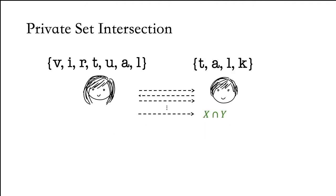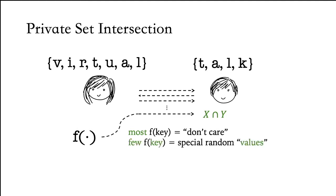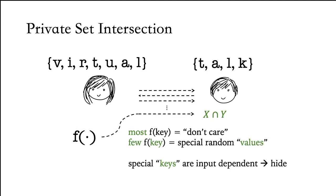In a large number of PSI protocols, you encounter the following scenario. Alice has a function f. For most keys, she doesn't care what this function evaluates to. For a small number of keys, she wishes to convey a specially crafted random value to Bob. This small set of keys depends on her input and she wants to keep this private. So the goal is for Alice to compactly convey this function to Bob while ensuring that Bob can't distinguish if he is evaluating f on one of these special keys or a key outside of it.